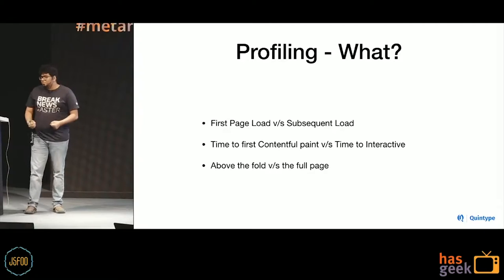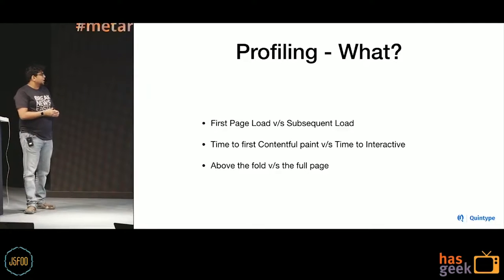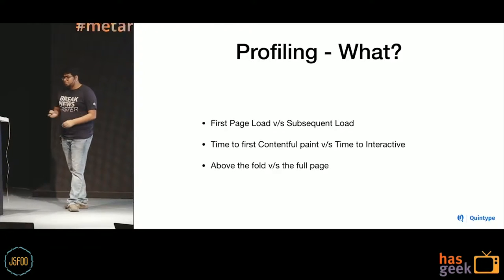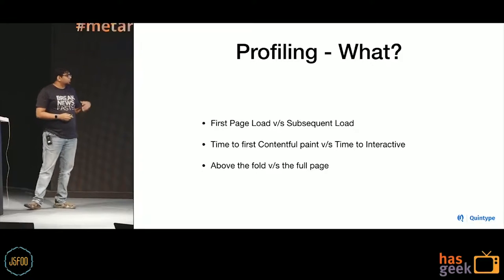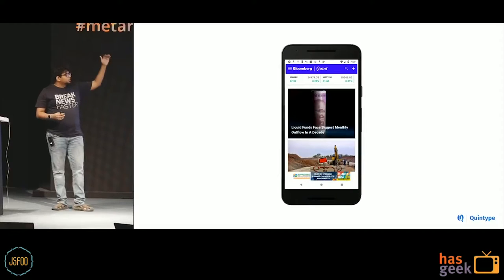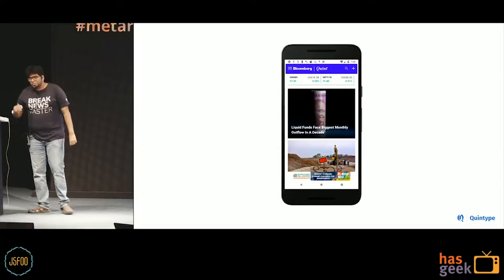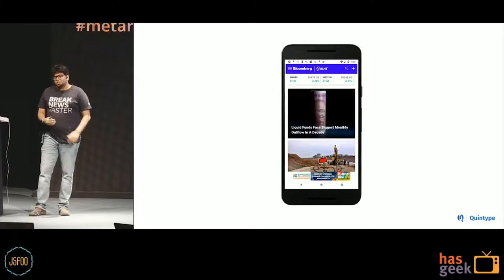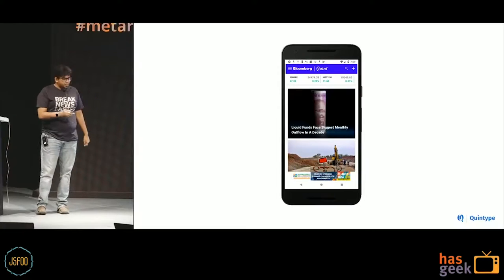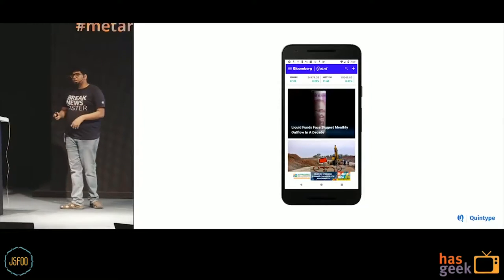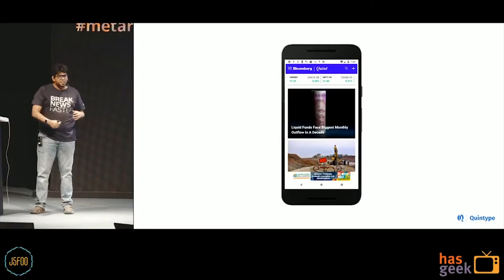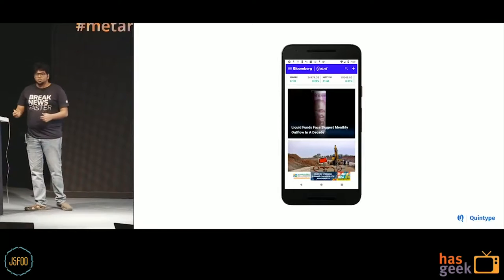Above the fold - typically on your mobile device, whatever is visible on the first screen, and maybe 20-30% below the bottom of that, is what everyone refers to as the fold. You should have targets for each of these metrics - something like: I want my first load to be under a second and subsequent load to be under maybe half a second.